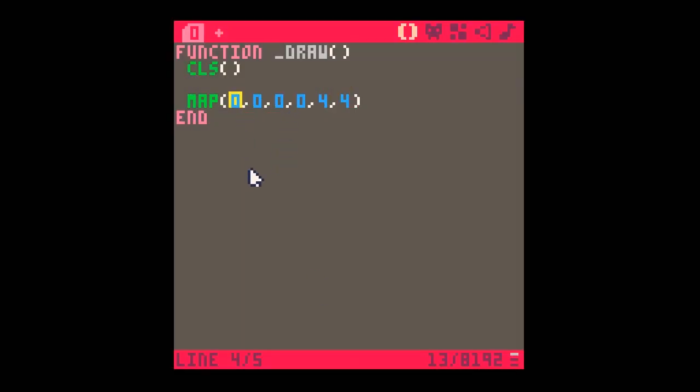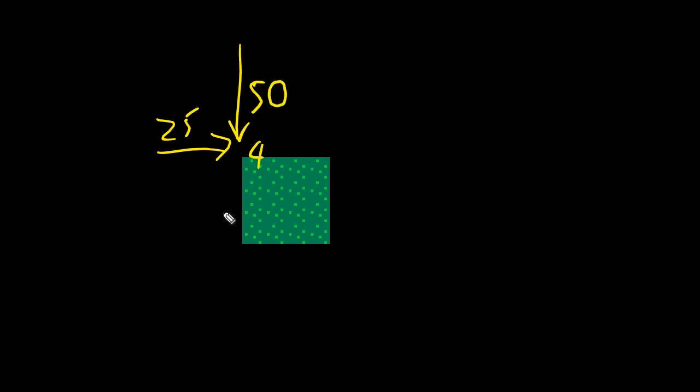With a four-by-four region you can count one, two, three, four squares across and the same going down. We could also reposition the map on screen — for instance, placing it 25 pixels in and 50 pixels down, using map(0, 0, 25, 50, 4, 4). Running that moves the drawn region 25 pixels right and 50 pixels down. This is quite useful because we can start moving the map across the screen to make it appear more convincing.